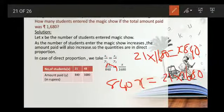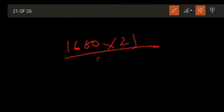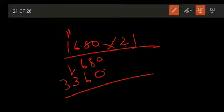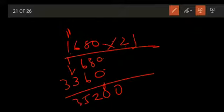Now we have to do 1680 into 21. Multiplying: 1680 into 1 gives 1680, and 1680 into 2 gives 3360. Adding gives 35280. So 840X is equal to 35280. You have to divide 35280 by 840.